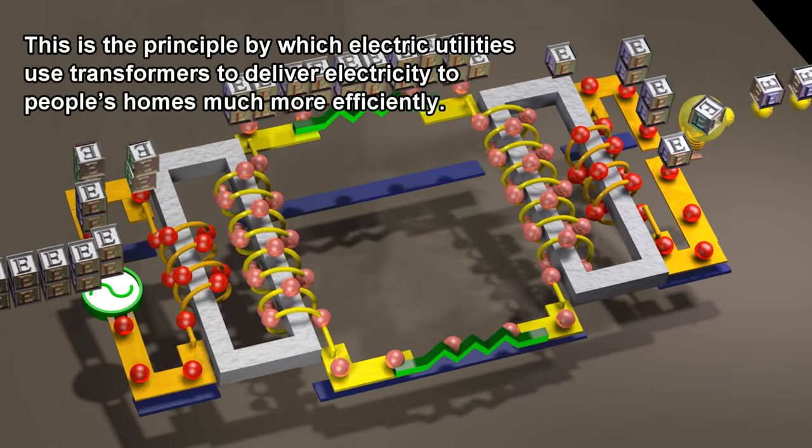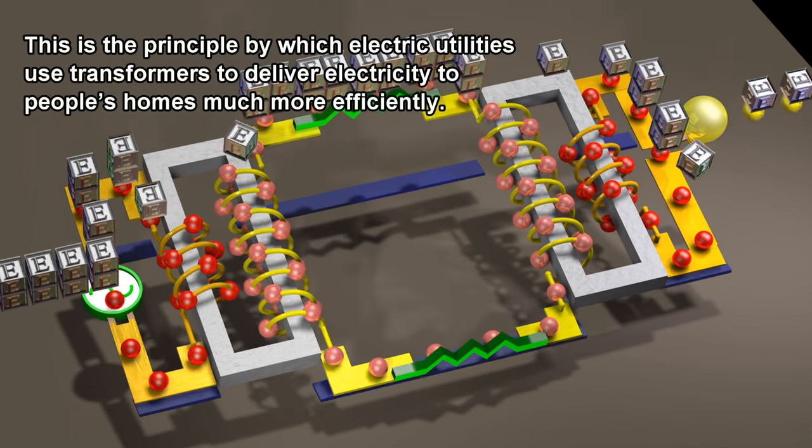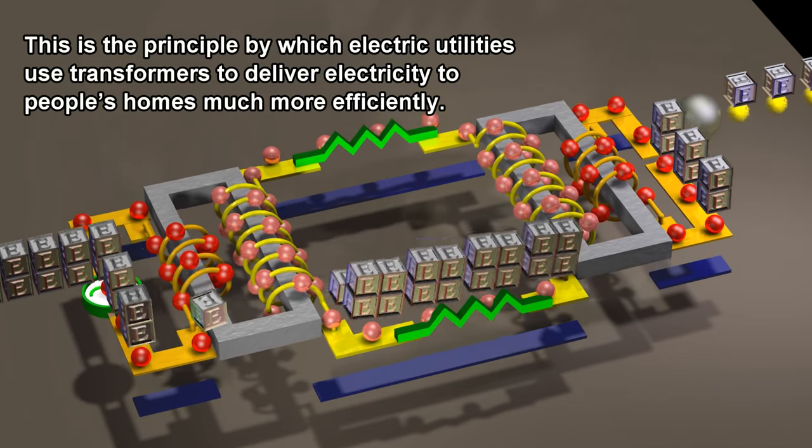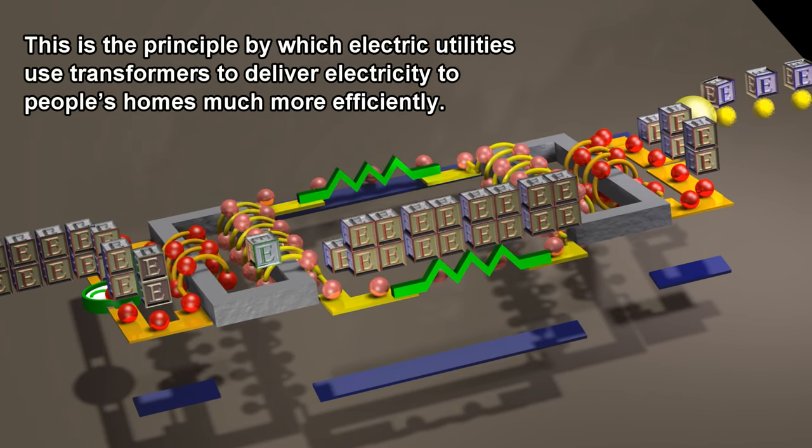This is the principle by which electric utilities use transformers to deliver electricity to people's homes much more efficiently.